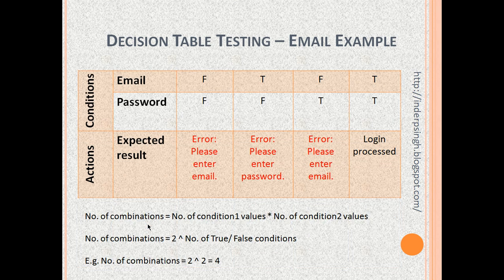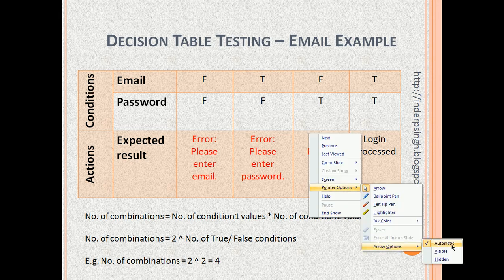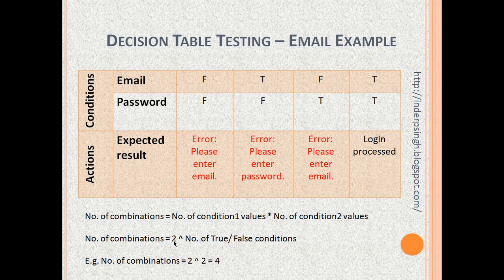Now, exactly the same decision table — how do we arrive at the number of different condition combinations? The number of combinations is the number of condition 1 values multiplied by the number of condition 2 values. For email, we can give false or true — two values. For password, also two values. So it is 2 times 2, giving 4 combinations. Another way to find out the number of combinations is: if each condition is true/false, then we can find 2 raised to the power of the number of conditions. Here it is 2 raised to power 2, which is 4.